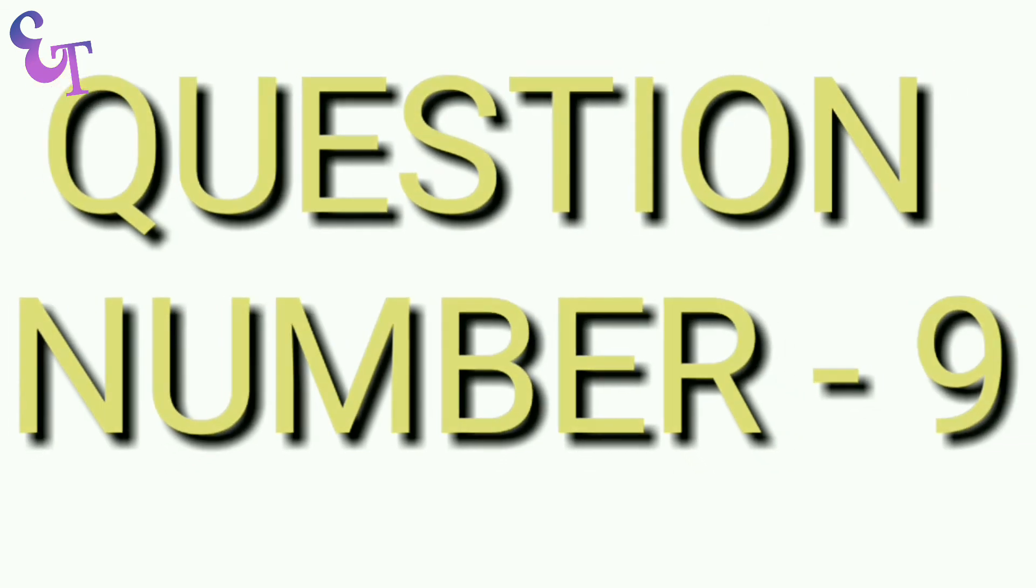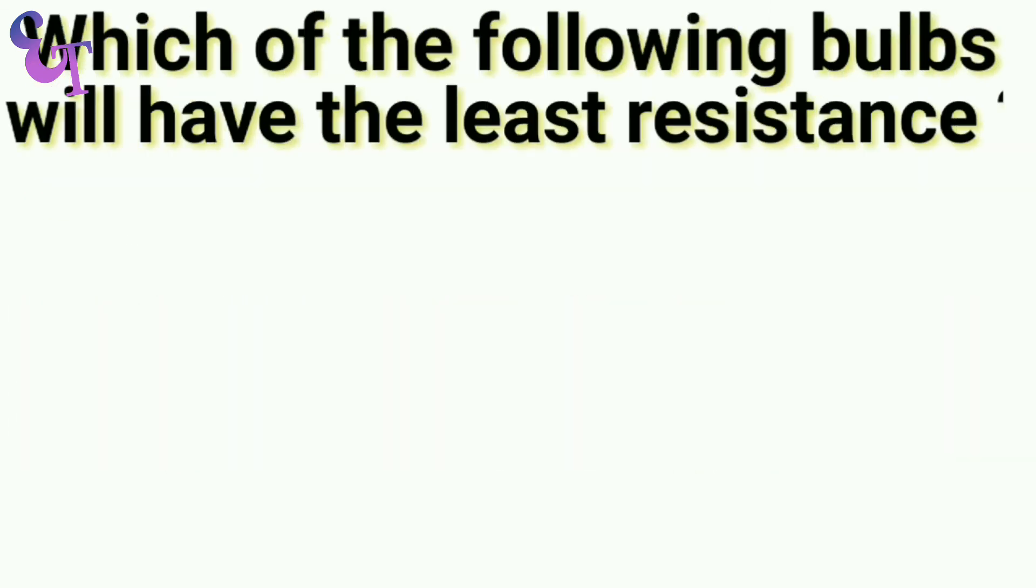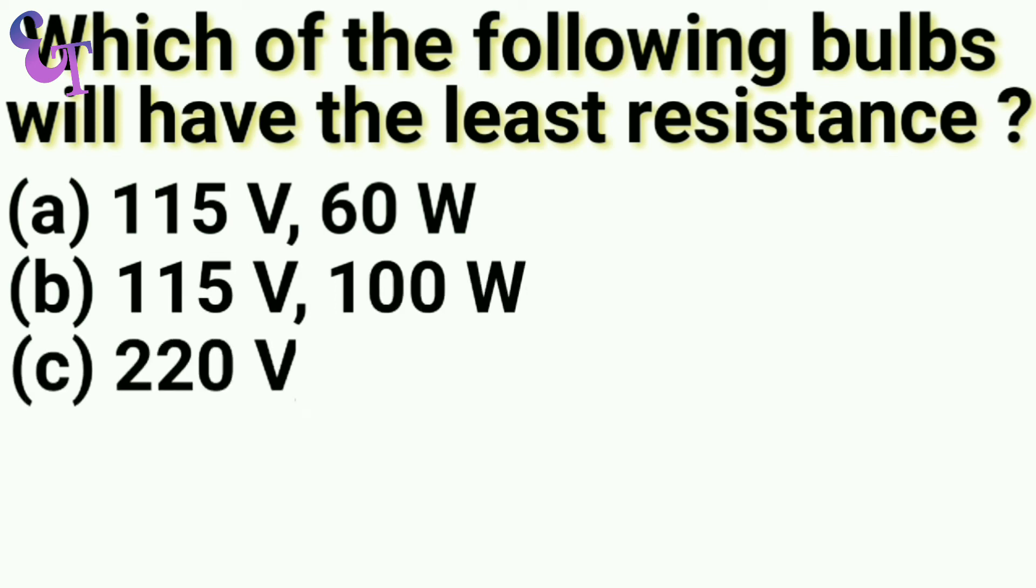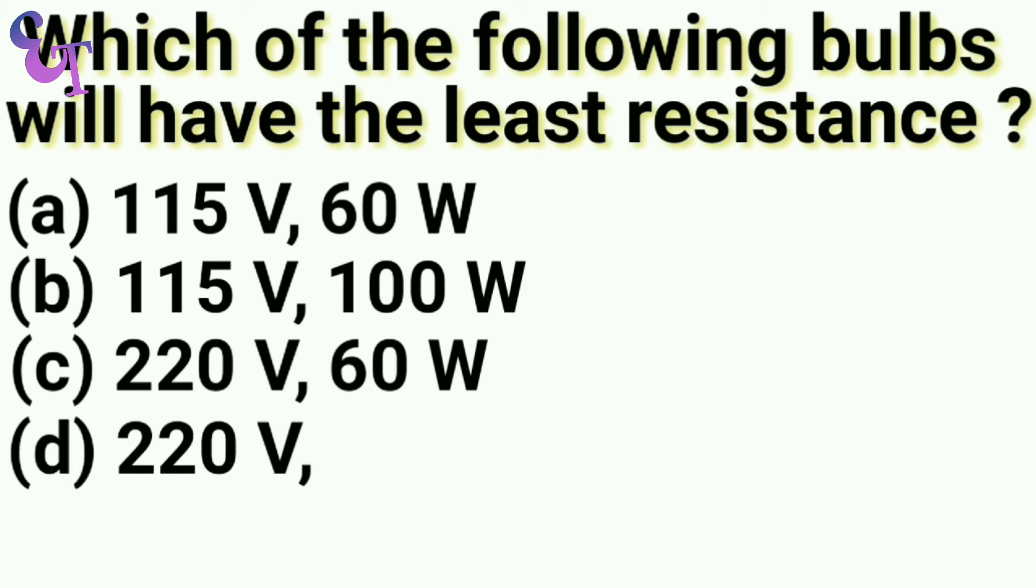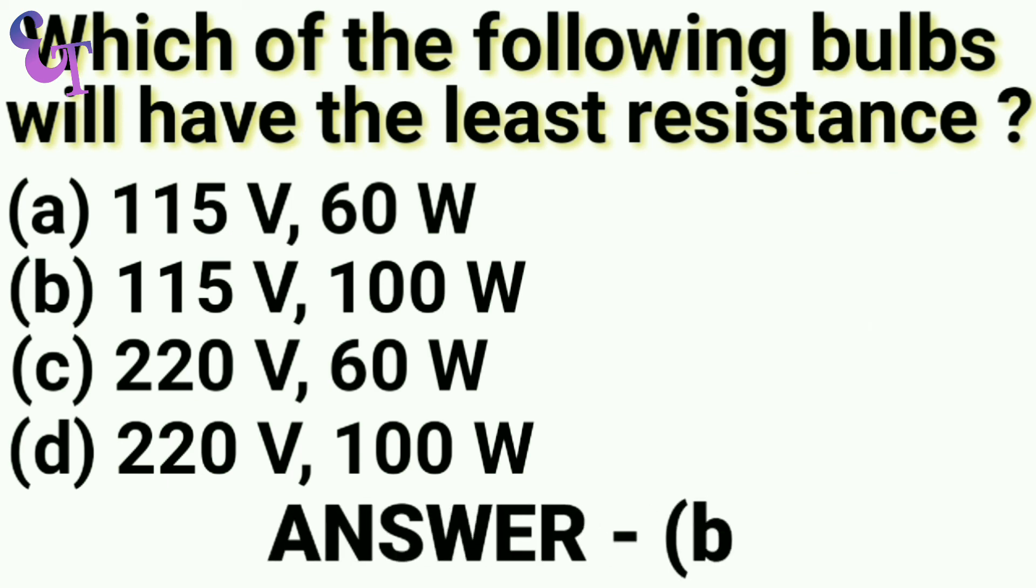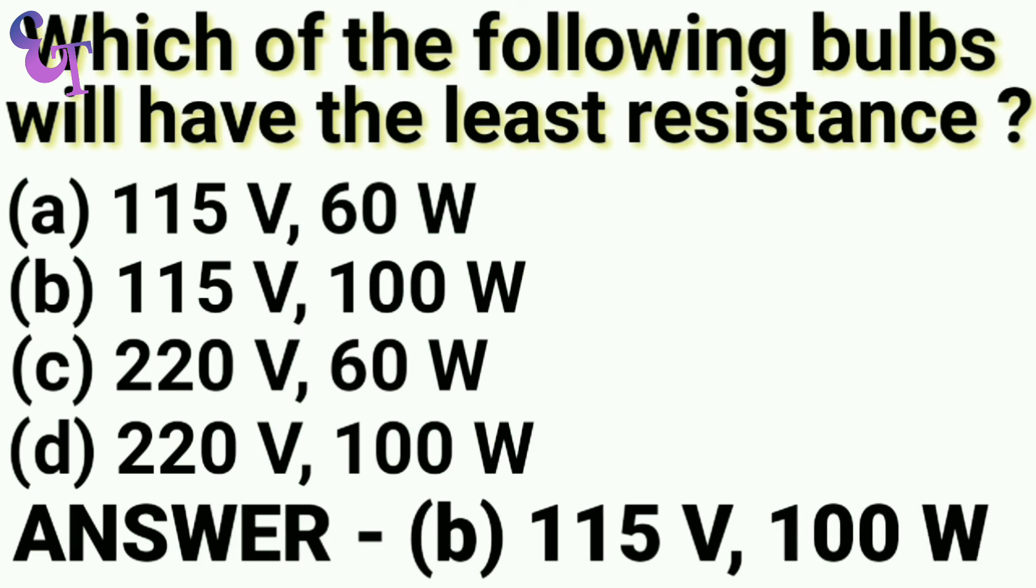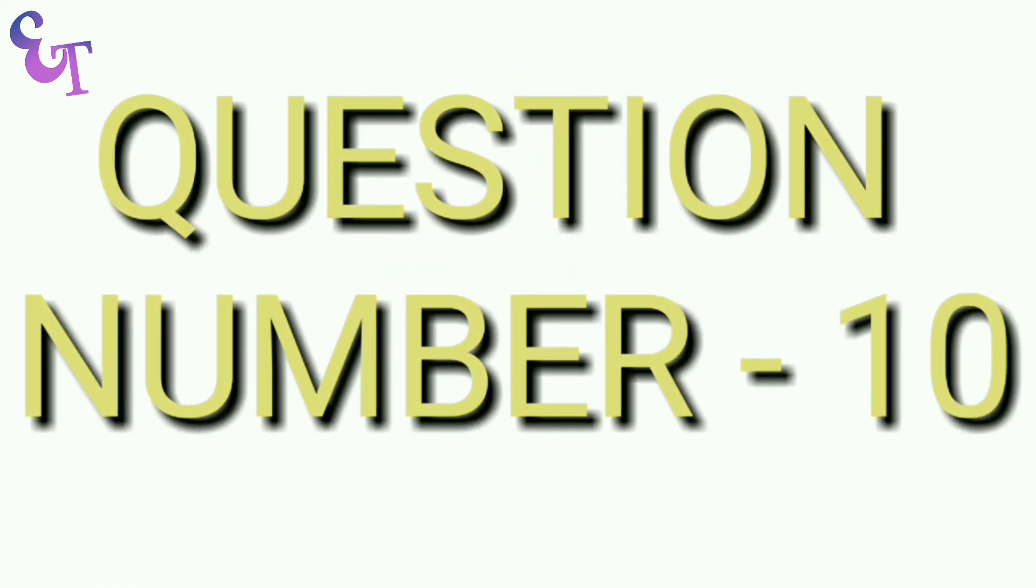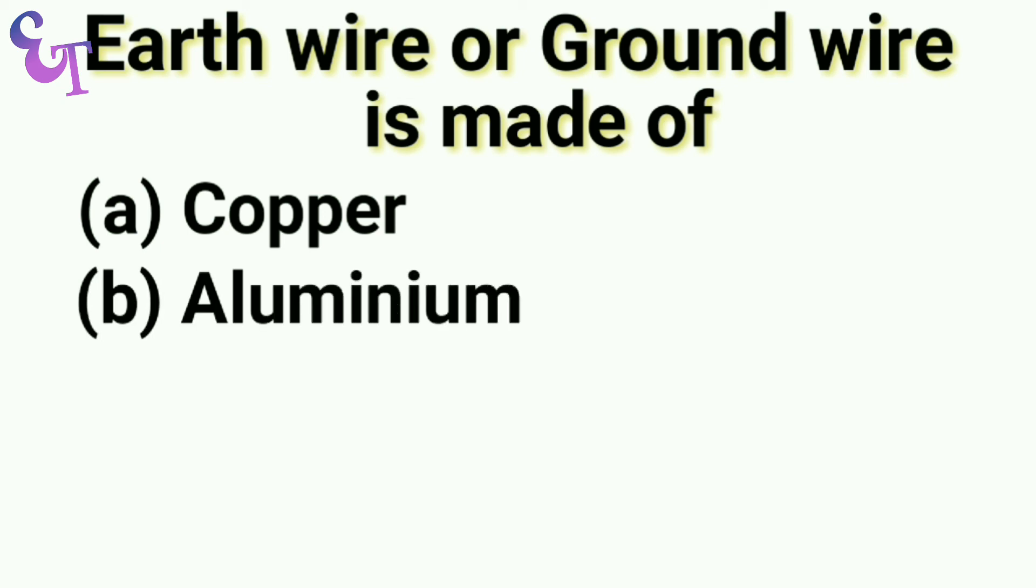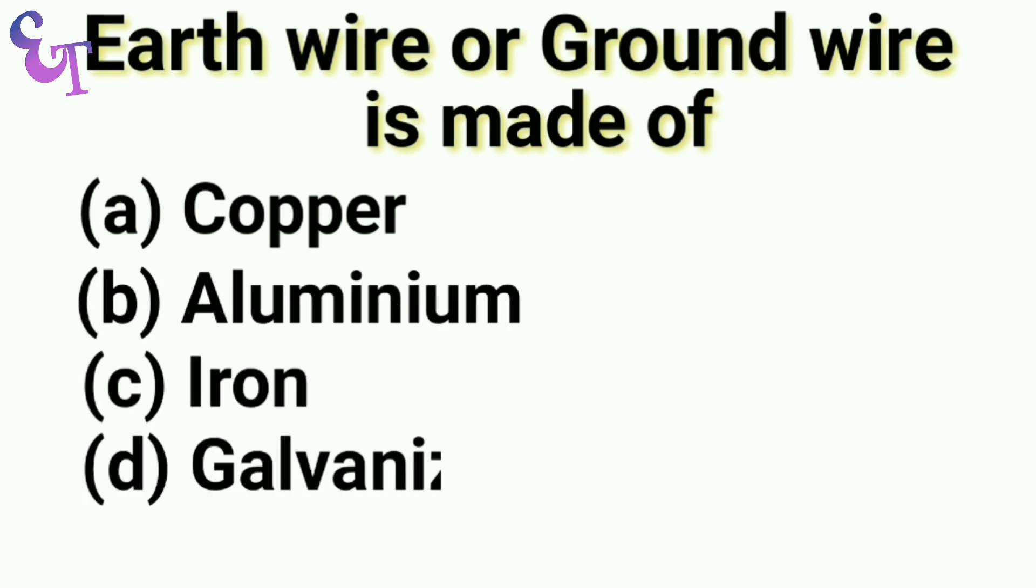Question number 9: Which of the following bulbs has the least resistance? A. 150 volt 60 watt, B. 150 volt 100 watt, C. 220 volt 60 watt, D. 220 volt 100 watt. The right answer is B. 150 volt 100 watt.